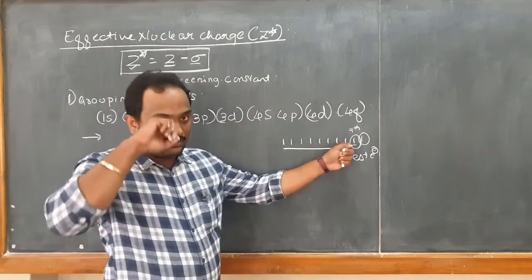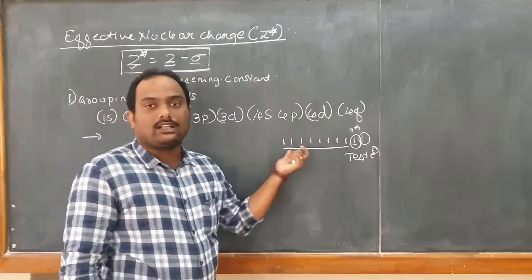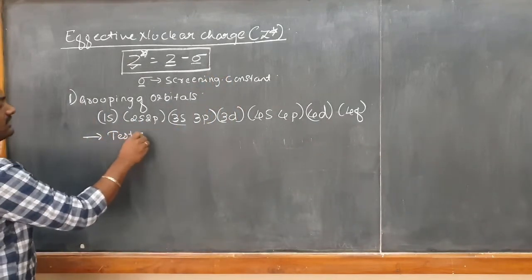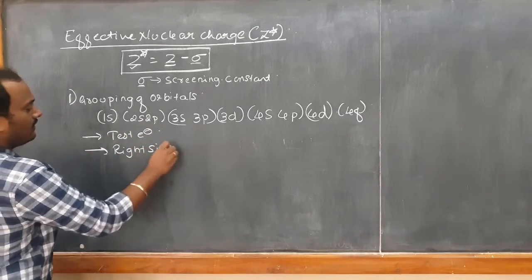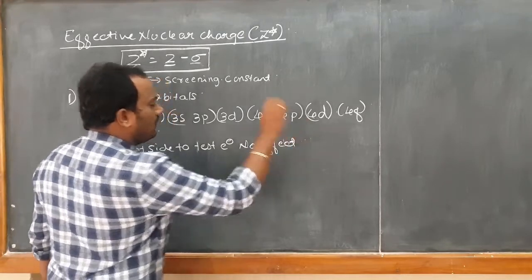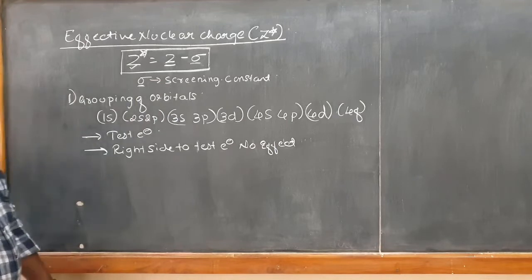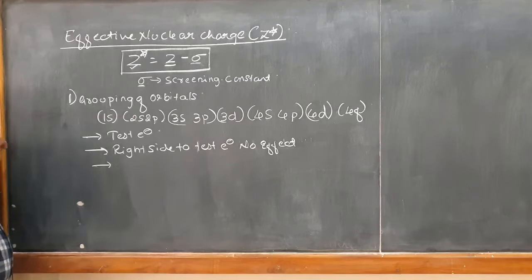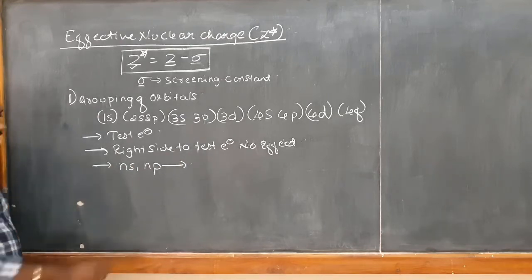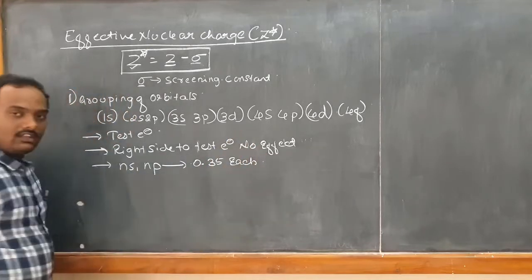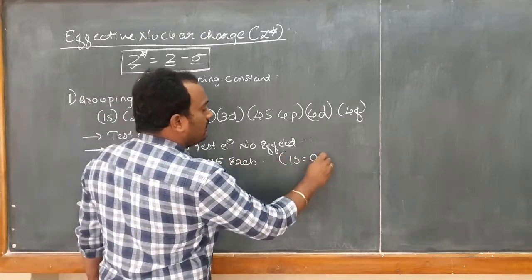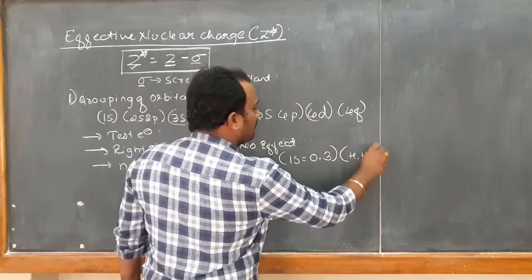For example, if you want to calculate for the 8th electron, the two electrons to the right have zero effect, and only the remaining seven electrons count. Now for the rules: if the test electron is present in an Ns or Np orbital, you take 0.35 for each electron in the same group. The only exception is the 1s orbital — for hydrogen and helium, you take 0.3, not 0.35. This is a special case.